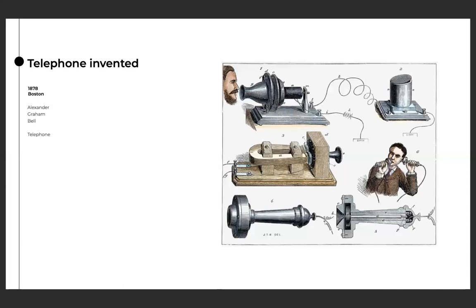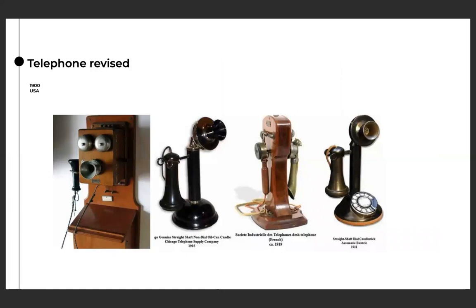A year later, the nation's largest cities began installing phone service, and by 1907 there were more than 6 million phones in use. As service was installed throughout the early 1900s, a user picked up the earpiece on the left and cranked the handle on the right to generate enough current to connect with an operator at a switchboard. The user would tell the operator who they wanted to reach, and the operator would connect them.